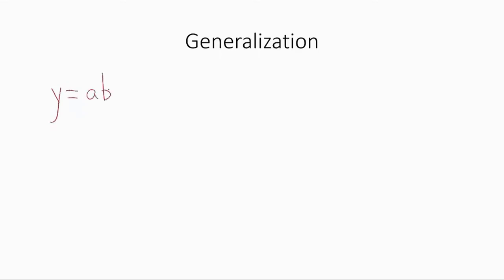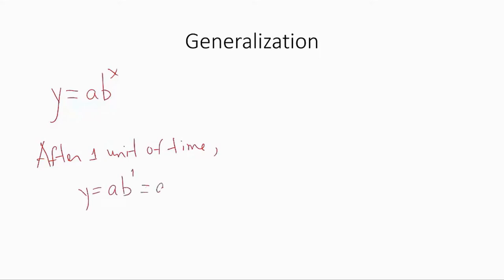But what about the general case? If you have an exponential equation of this form, y will equal a times (1 plus p) to the x, where p is the rate of growth or decay. One way to look at it is that after one unit of time, y will be equal to a times b to the first power — that's just a times b.